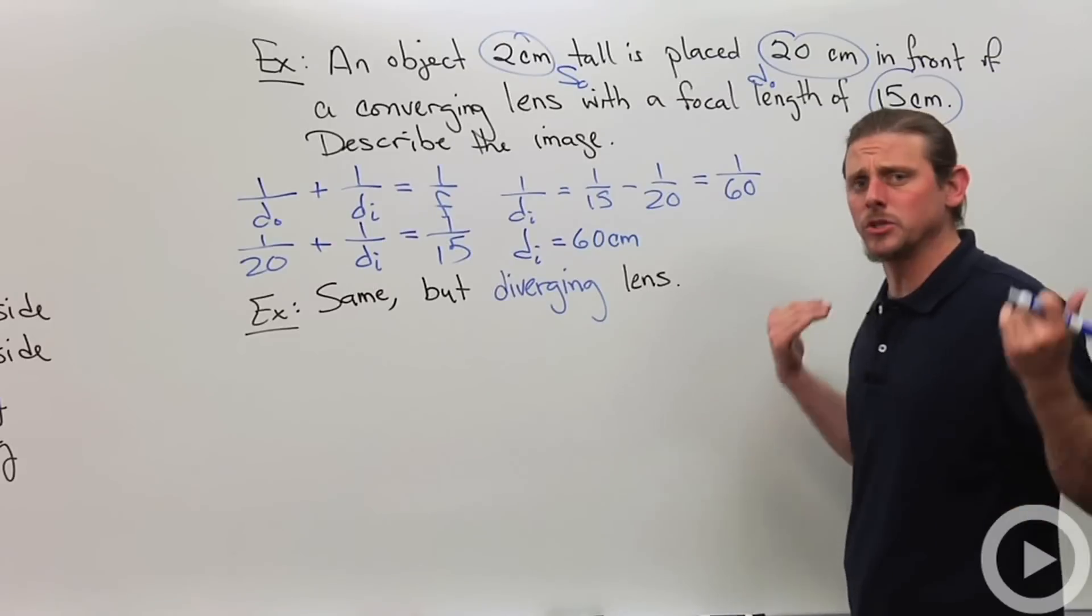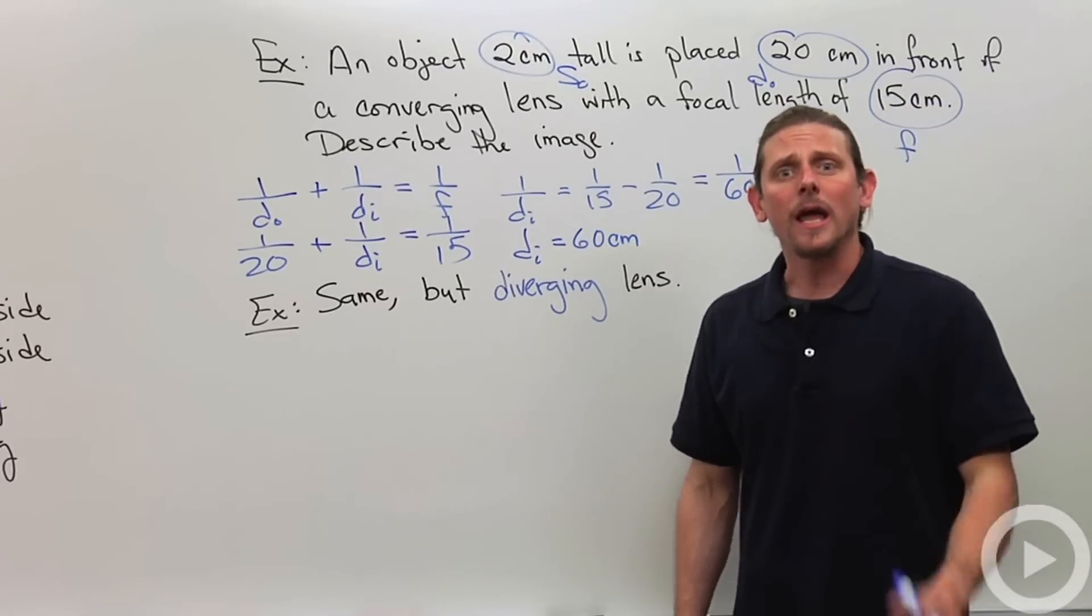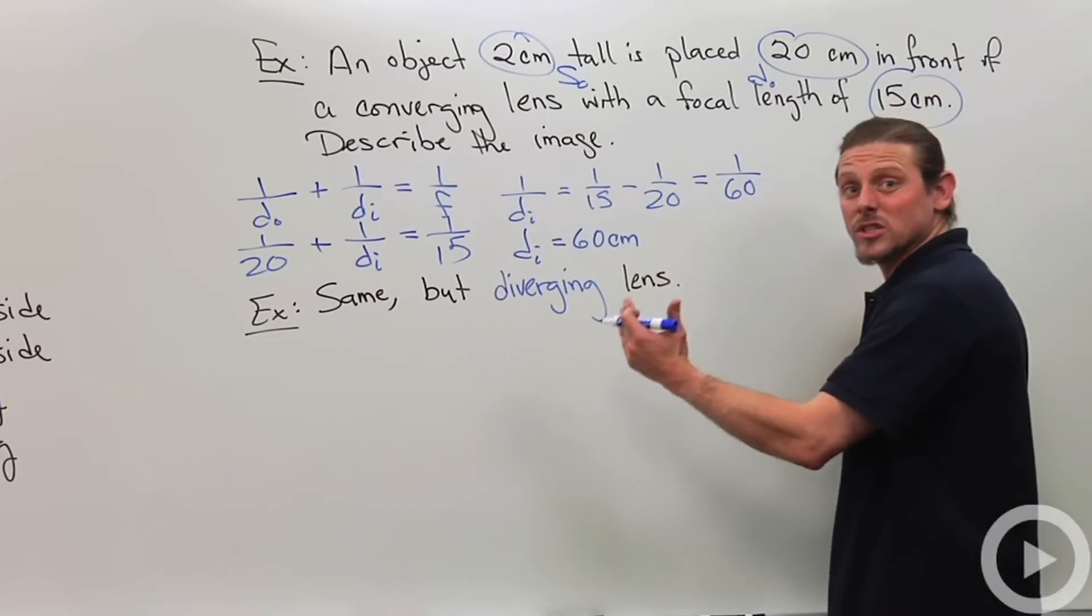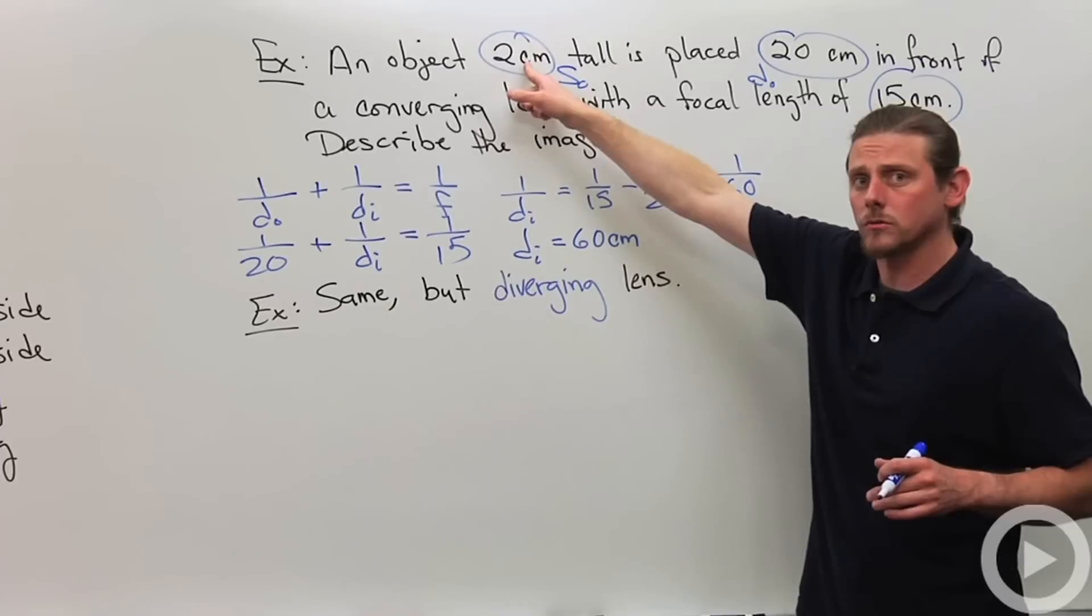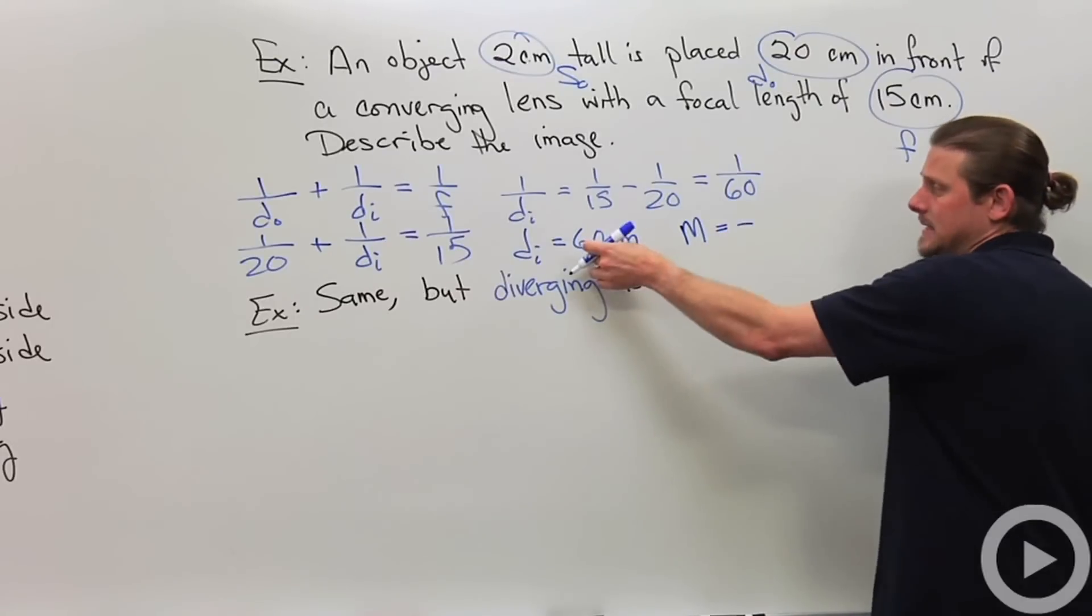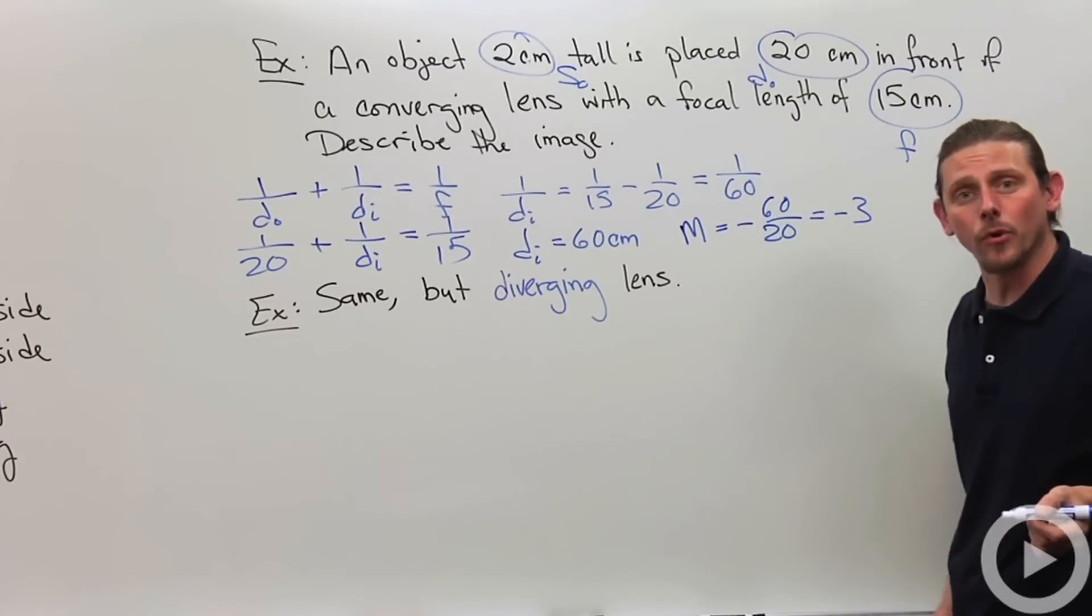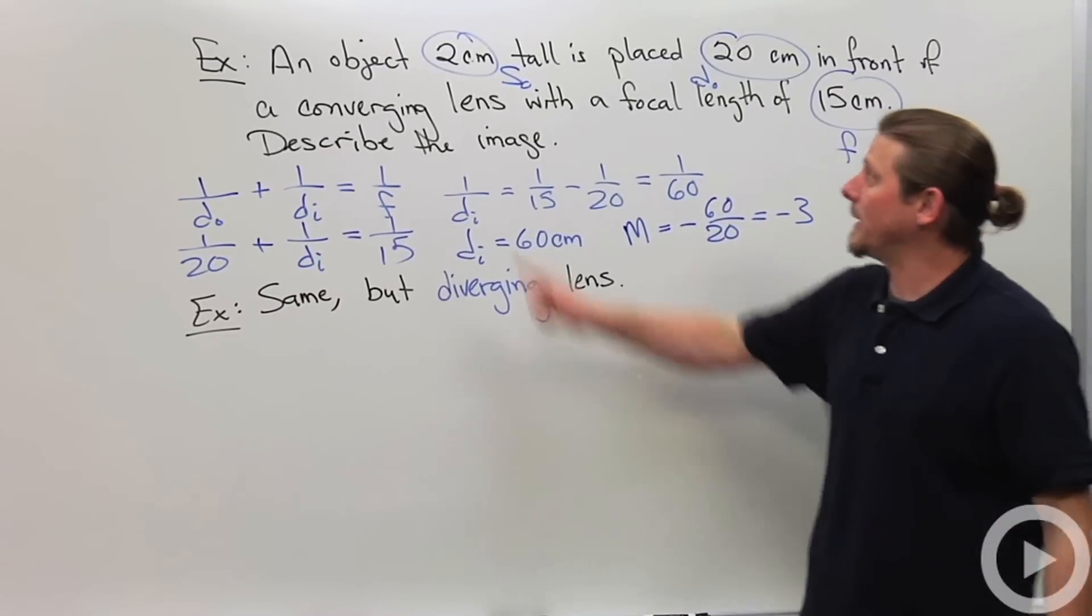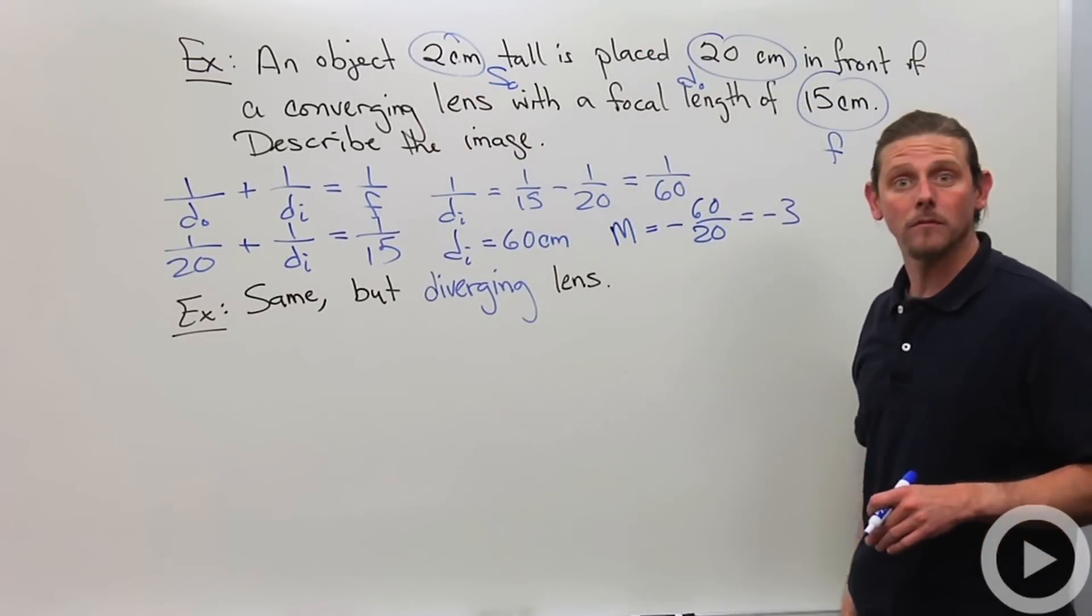So this means that DI is 60 centimeters. Now it wants me to describe the image, not just write down DI as 60 centimeters. So what I would say is the image is a real image, DI is positive, that is 60 centimeters on the other side of the lens from the object. What about its size? Well, SO is 2 centimeters. So that means that the magnification, which is minus DI over DO is negative 3. So that means it's an inverted image that's three times bigger. So it's going to be 6 centimeters tall, but upside down. And so that's the answer to this guy. Not that bad.